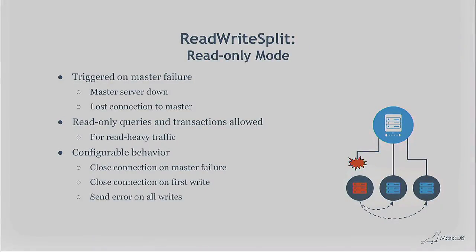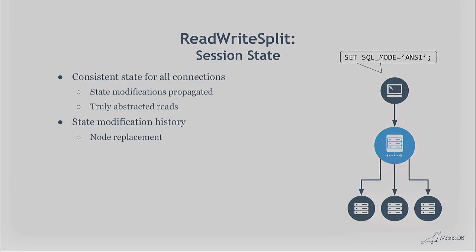Another feature is read-only mode: if your master server dies, you're left with slaves. MaxScale understands it has lost write capability but can still serve reads. When it detects a write request, it either closes the connection or sends a configurable error to the client. It also tracks session state — if a server fails and a replacement is picked up, session state is replayed on the new server.